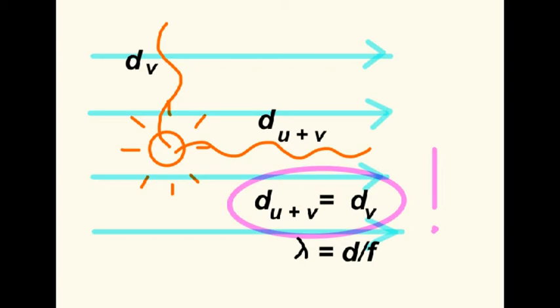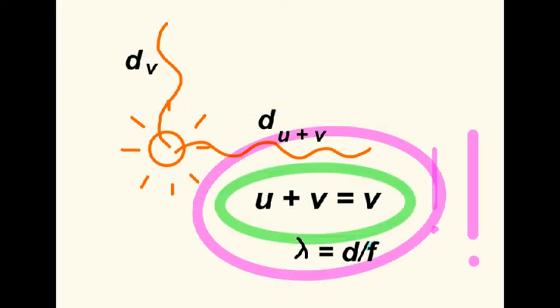But Michelson-Morley found, using optical interferometry, that D U plus V was actually equal to D V when counting the numbers of wavelengths. It follows from this that U plus V must be equal to V. This could only be true if U was equal to zero, and we've already said that it's not.